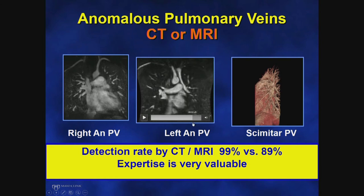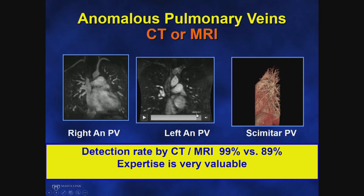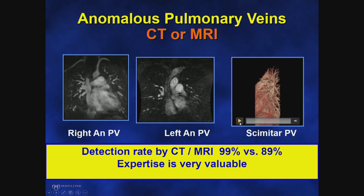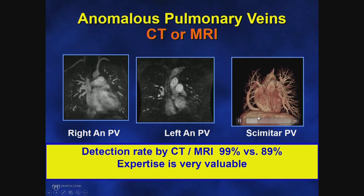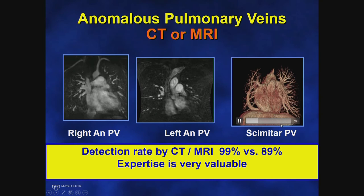On MRI you can trace the vertical vein going up and connecting with the anomalous vein into the SVC. Anomalous right lower or inferior pulmonary vein connecting into the IVC — known as scimitar syndrome — can be seen on echo, CT, or MRI, with a nice CT scan demonstrating the right-sided pulmonary vein emptying into the IVC at the level of the diaphragm.